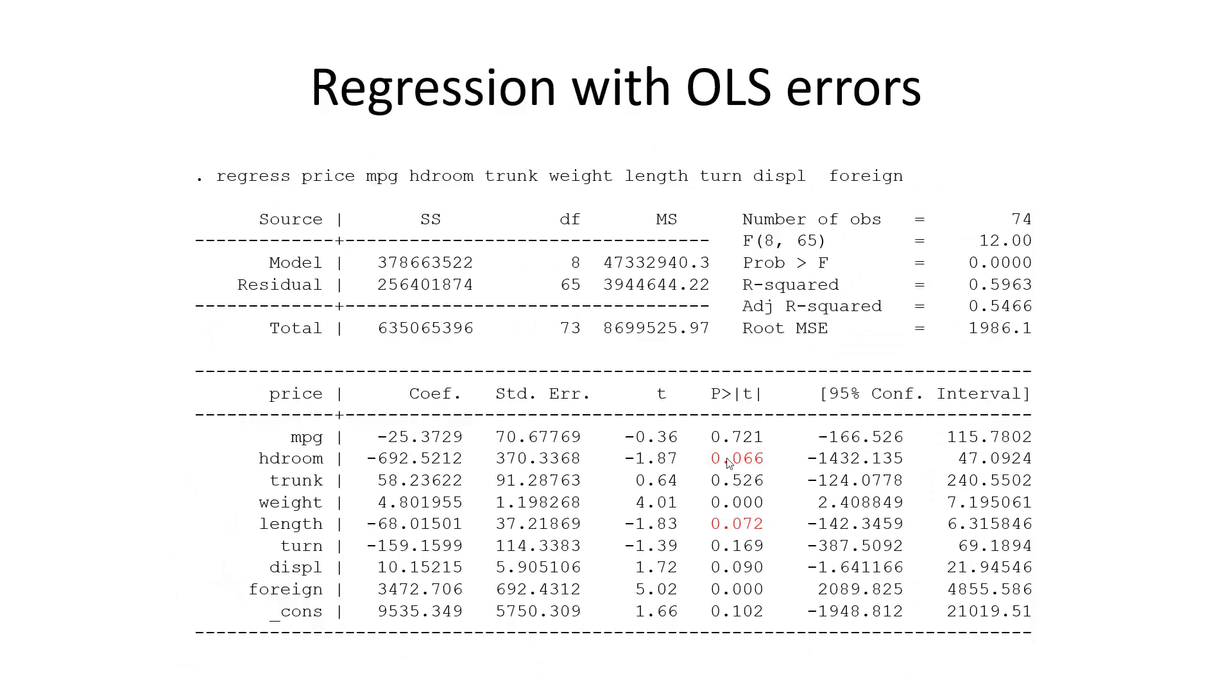And I'm highlighting two variables because they will turn out to change as a function of whether we specify robust standard errors or not. So two other variables here, most highly significant: foreign. So on average, if the car is foreign from a U.S. perspective, that adds $3,400 to the car.